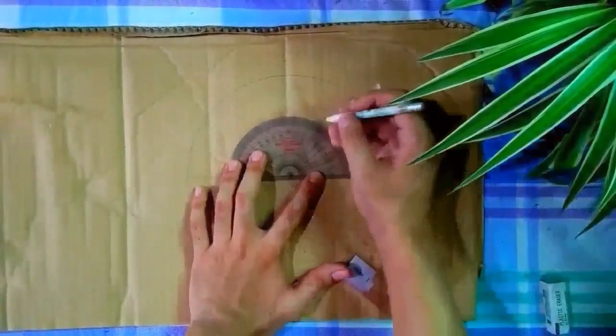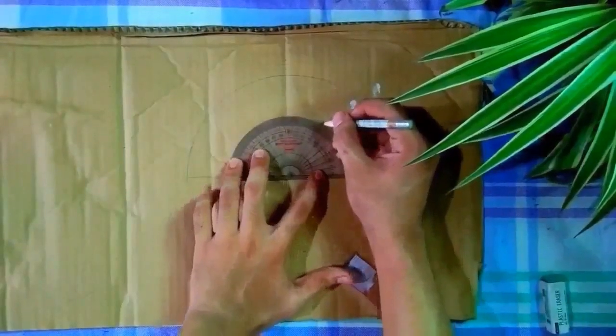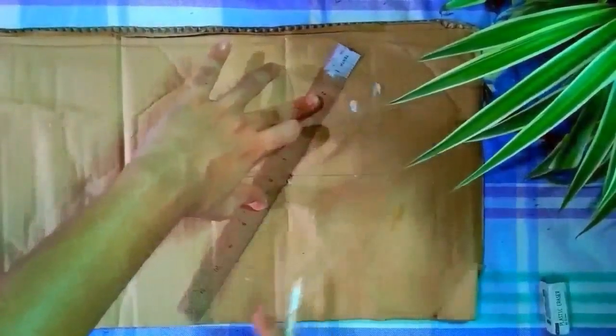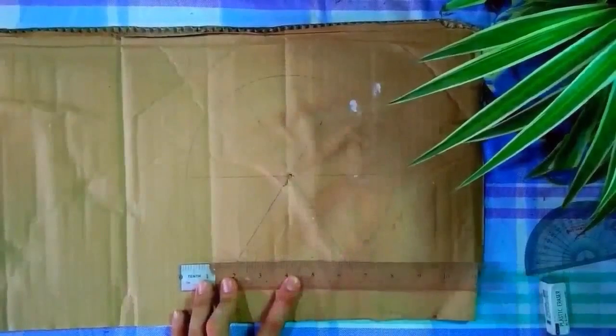Using a protractor, mark 60 degrees from the midpoint since the hexagon has 6 sides, so 360 degrees divided by 6. Connect the two points. Do it to the other part of the circle. Connect the endpoints at the edge of the circle to form a hexagon.